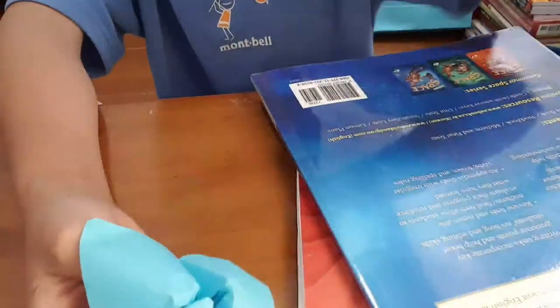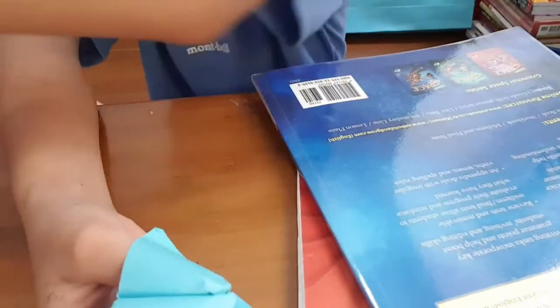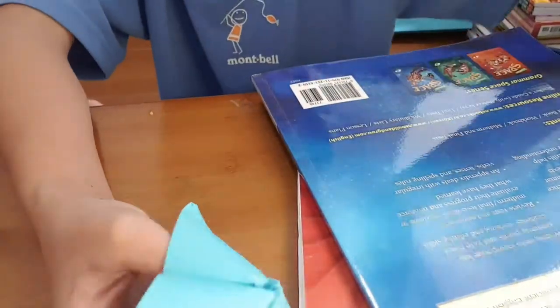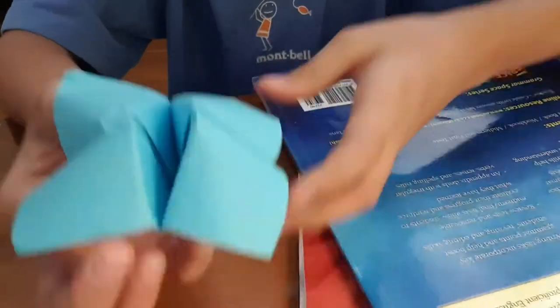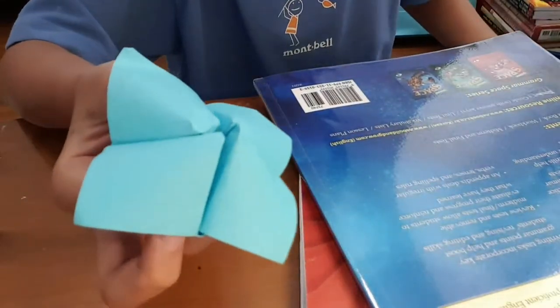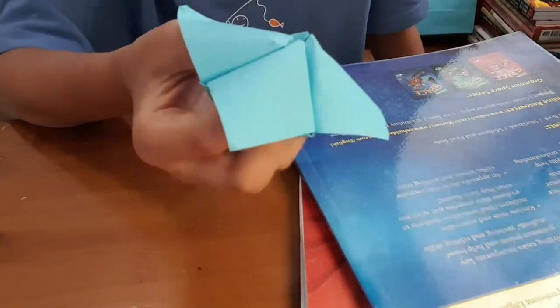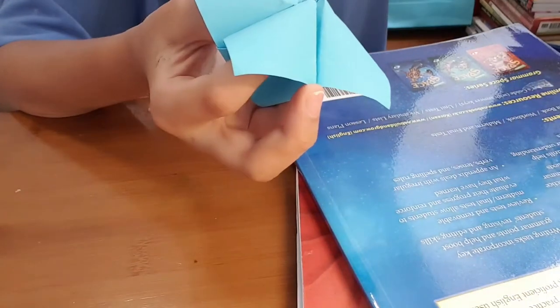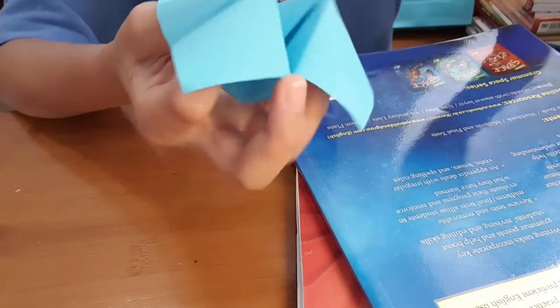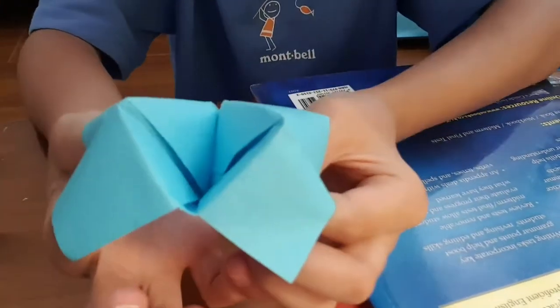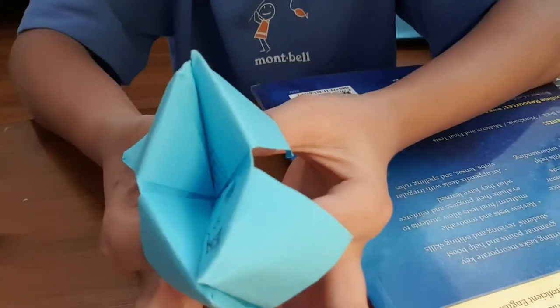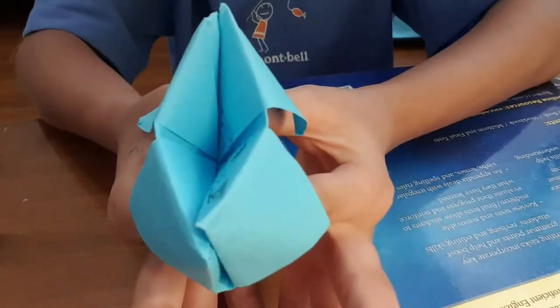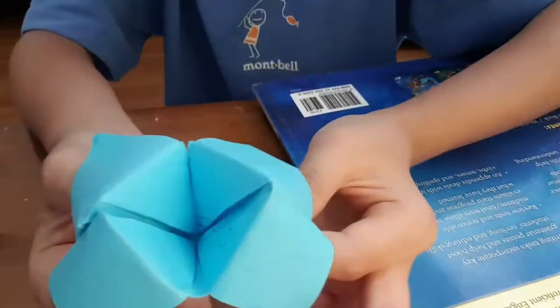So choose a person to say a number, one all the way to a hundred. It can't be over a hundred, well it can if you're quick at counting. So let's say I had a friend next to me, Liam, and then Liam says a number like ten. I do one, two, three, four, five, six, seven, eight, nine, ten.